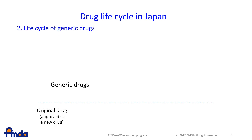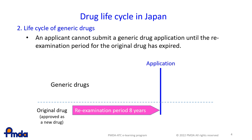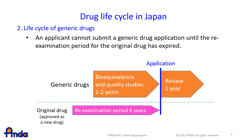This shows the life cycle of generic drugs. First, an applicant cannot submit a generic drug application until the re-examination period for the original drug expires. For generic drug applications, animal studies and clinical studies are not required, because the drug's safety and efficacy are already established. Bioequivalence and quality studies are only necessary in the development of generic drugs. Generic drugs thus tend to cost less than their original counterparts.